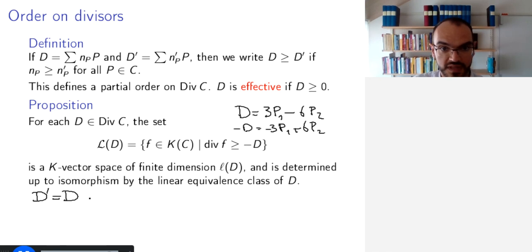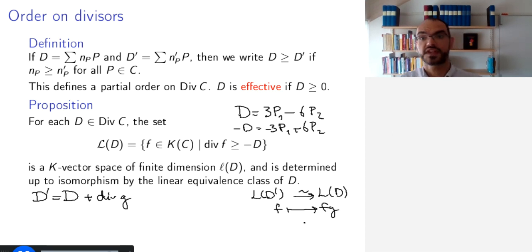So, then I want to create an isomorphism from L(D') to L(D), and the claim is multiplication by G precisely affords this isomorphism. Why is that?